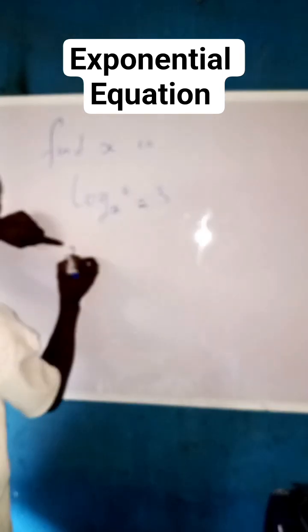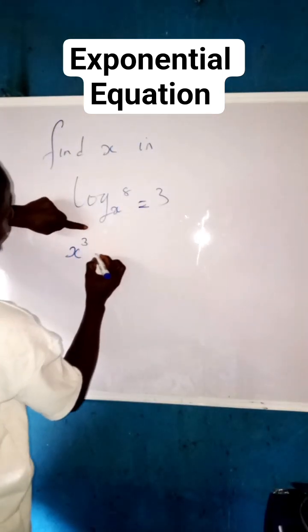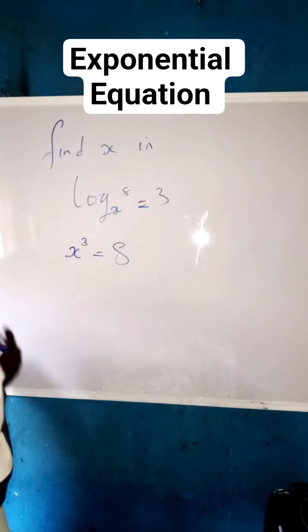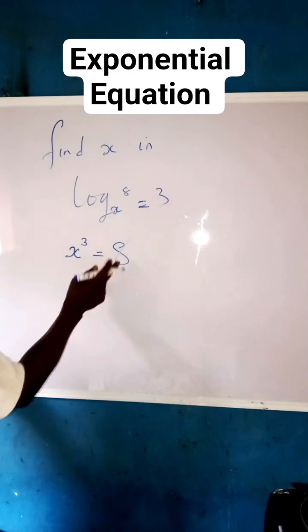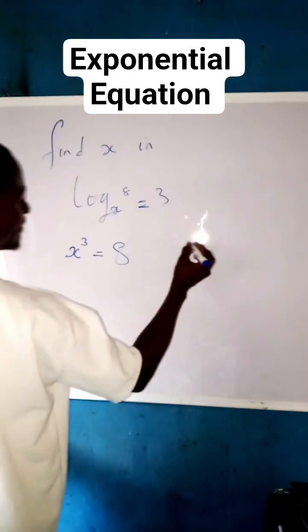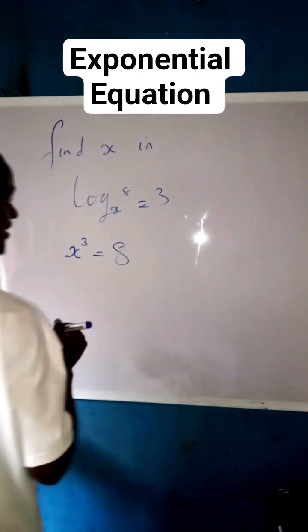So we're going to have x raised to the power of 3, then equals to 8. Now, we can say that we have x to the power of 3. Can we write this 8 in a way that we have the power of 3 with a different base? Yes.